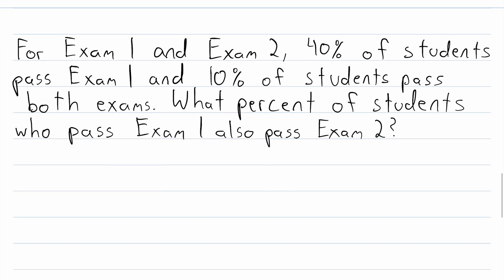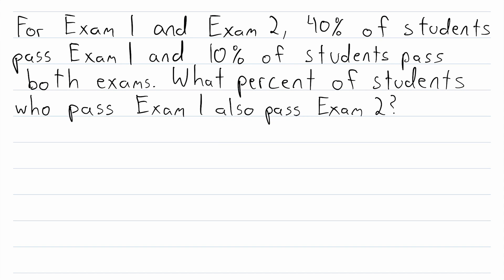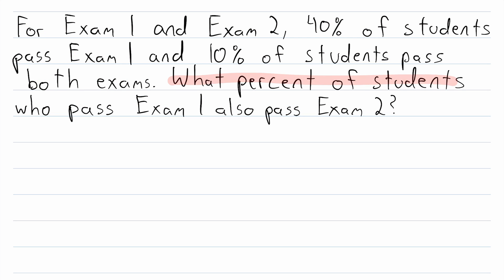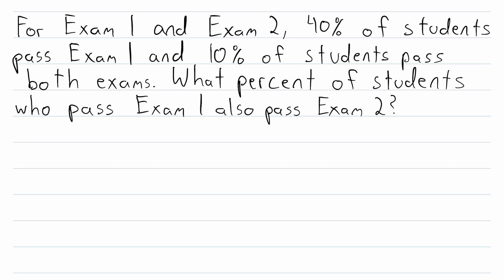Here's a practice problem to try on your own. For exam 1 and exam 2: 40% of students pass exam 1, and 10% of students pass both exams. What percent of students who pass exam 1 also pass exam 2? The given condition is that a student has passed exam 1 — knowing that, what's the probability they also pass exam 2? Let me know what you get in the comments, and I'll leave the solution in the description.